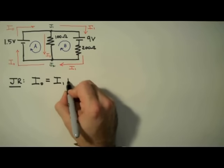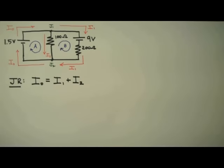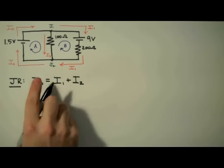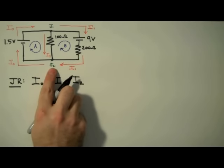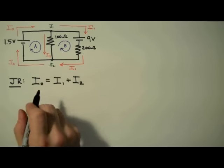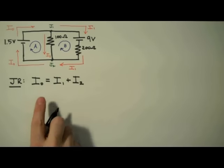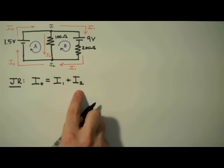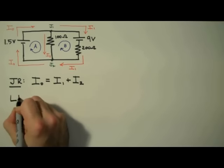This junction rule, by the way, is just a consequence of the conservation of charge. Now if I apply the junction rule to junction 2, we'll have I1 coming in as well as I2 coming in, so on the left-hand side it'd be I1 plus I2. And we have I0 coming out, so on the right side we have I0. This is exactly what we have already written, so we're not going to use that equation.